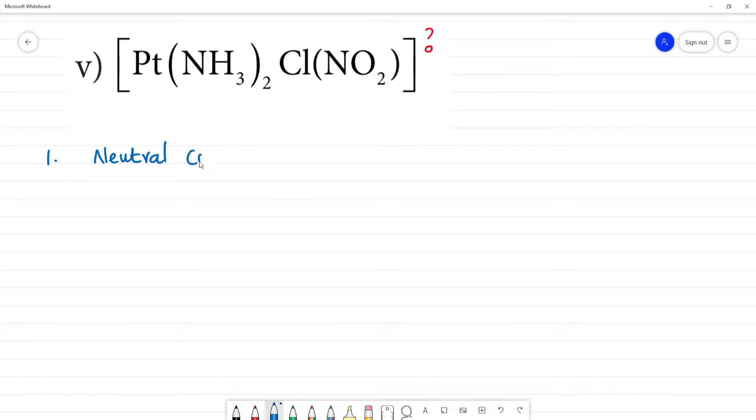Neutral complex. In the neutral complex, first we name the ligand. First ligand is NH3. What is NH3? NH3 is amine. This is neutral ligand. The charge is zero. Two are present, so we use di, diamine.